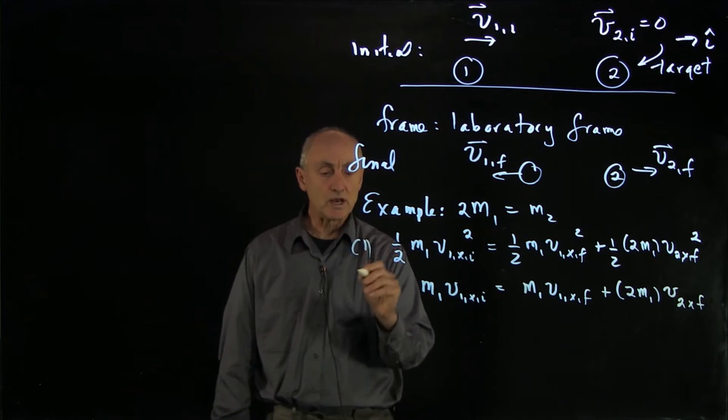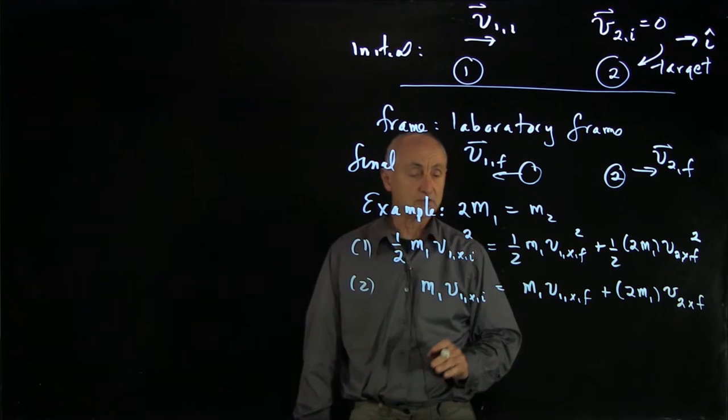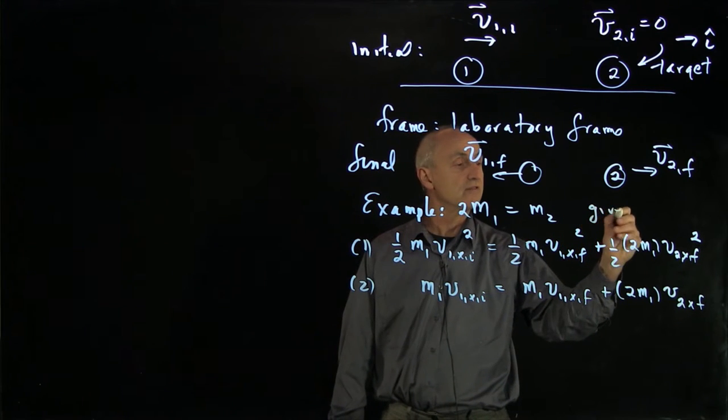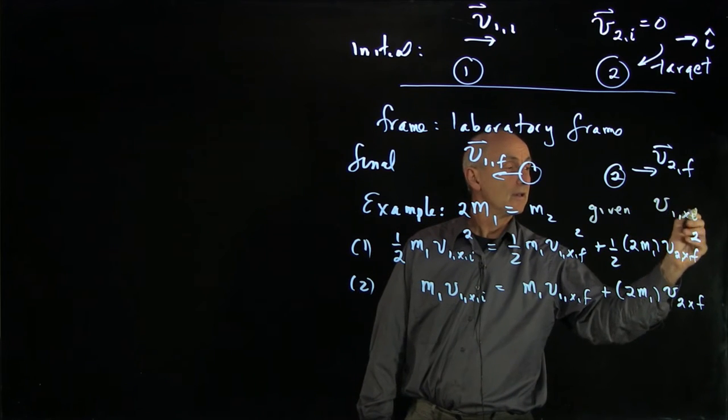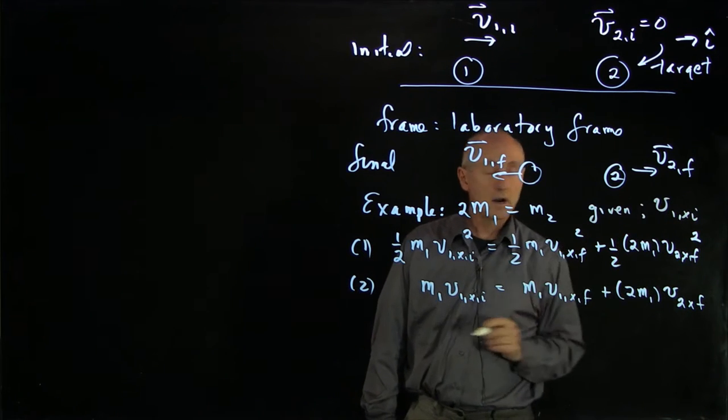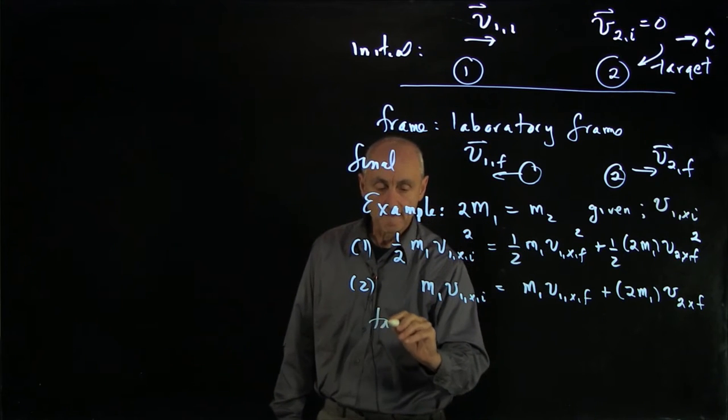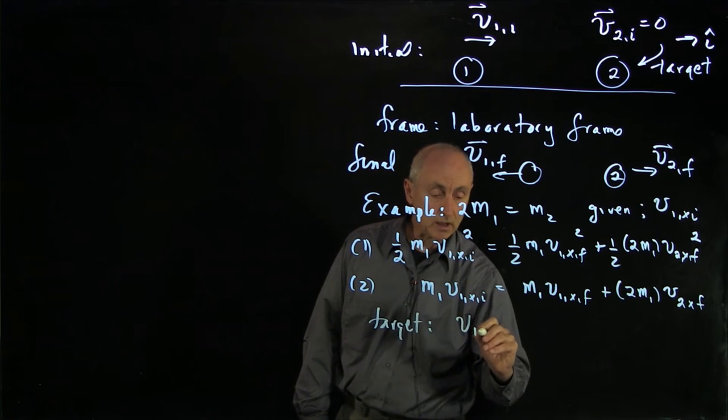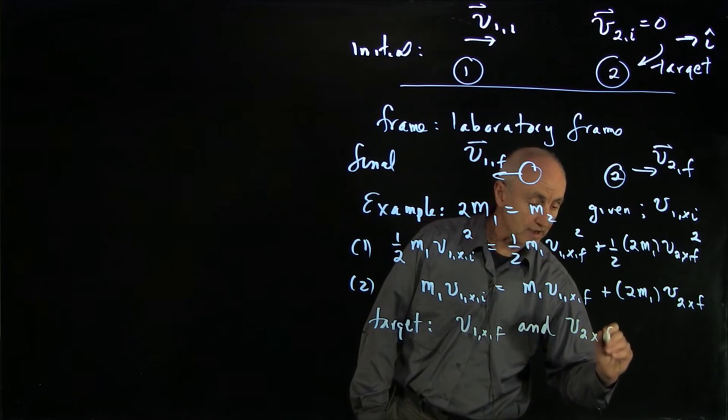These two equations represent a system of two equations with two unknowns. We'll treat this as givens along with the initial velocity of particle 1. Our target here is to solve for v1x final and v2x final.